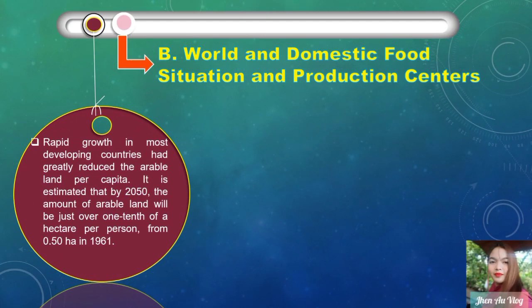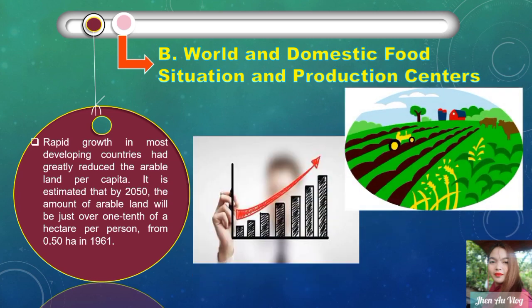Rapid growth in most developing countries has greatly reduced arable land per capita. It is estimated that by 2050, the amount of arable land will be just over one-tenth of a hectare per person, down from 0.50 hectare in 1961. The effect of increasing populations will mean lesser arable lands to cultivate — we will have lower arable lands in 2050 than in 1961.